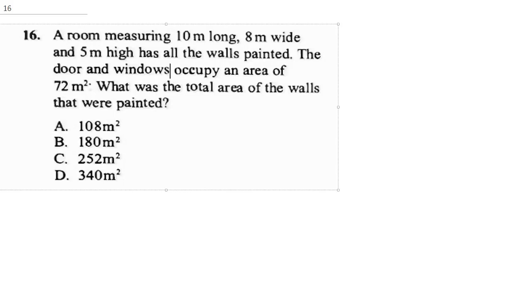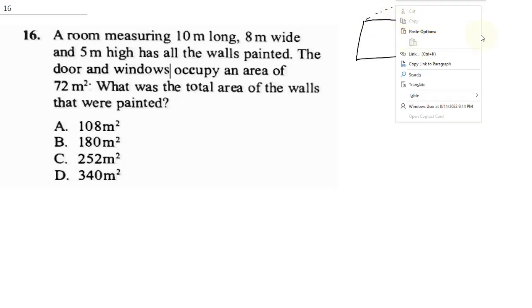It says, a room measuring 10 meter long, 8 meter wide, and 5 meter high has all the walls painted. The door and windows occupy an area of 72 meter square. What was the total area of the wall that was painted? In order to explain this question to you, I'm going to bring in the concept of a cuboid.